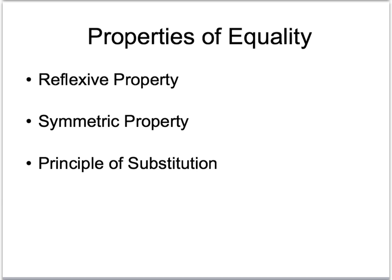The first one is the reflexive property, which says that if you have a number A, it's going to be equal to A. So the number is always equal to itself. So 2 is always equal to 2.